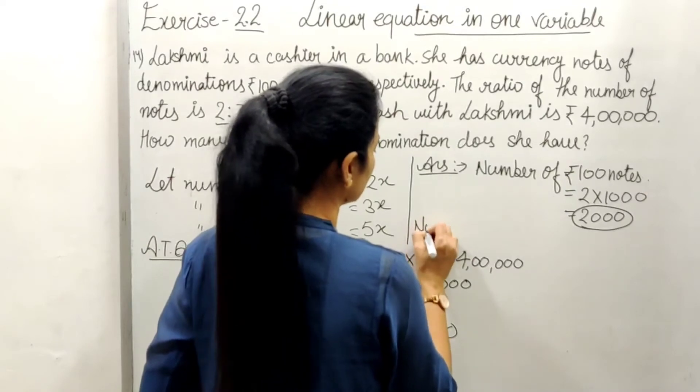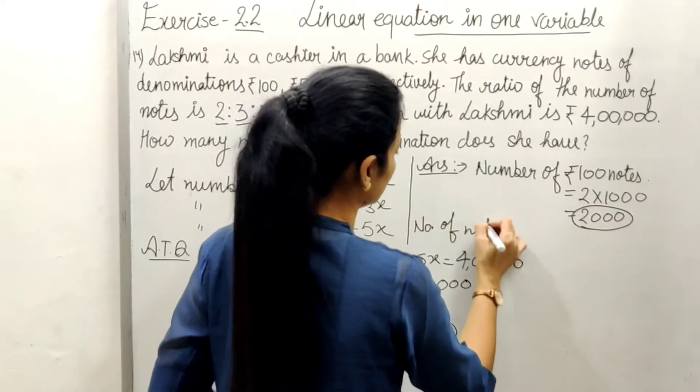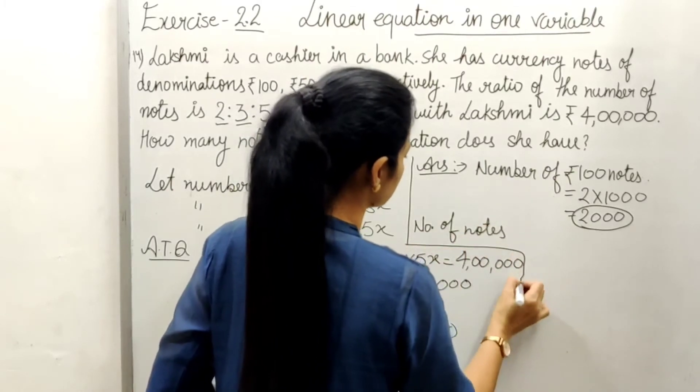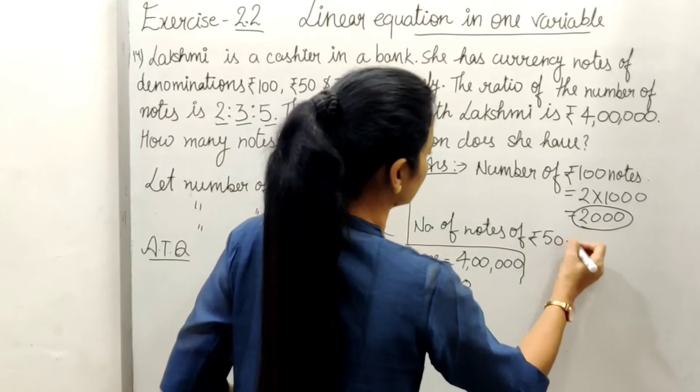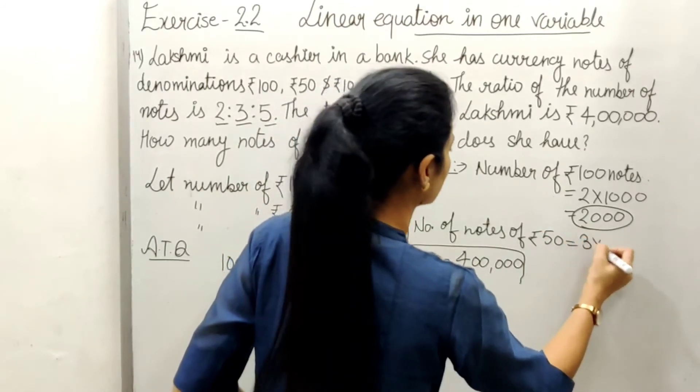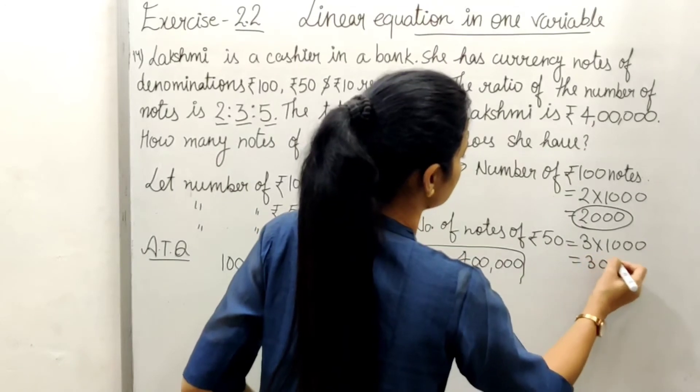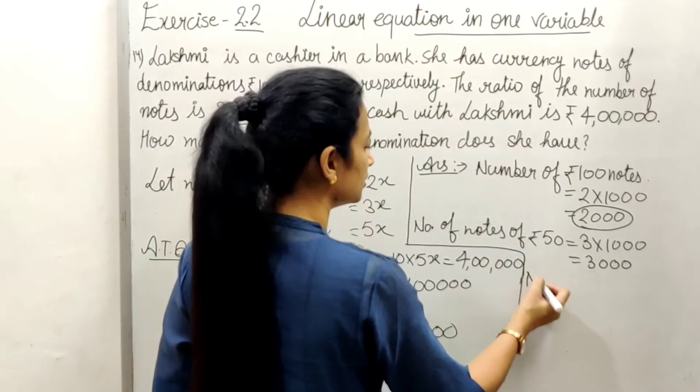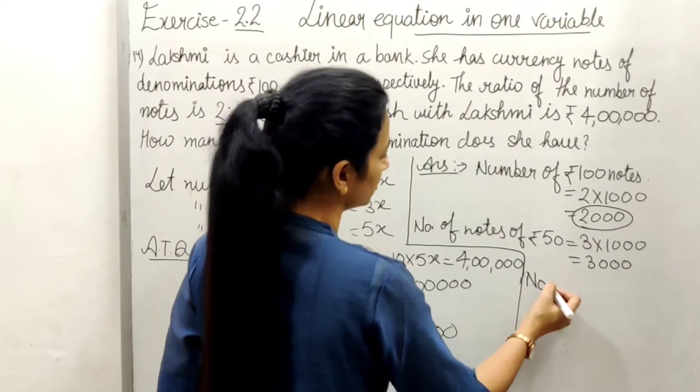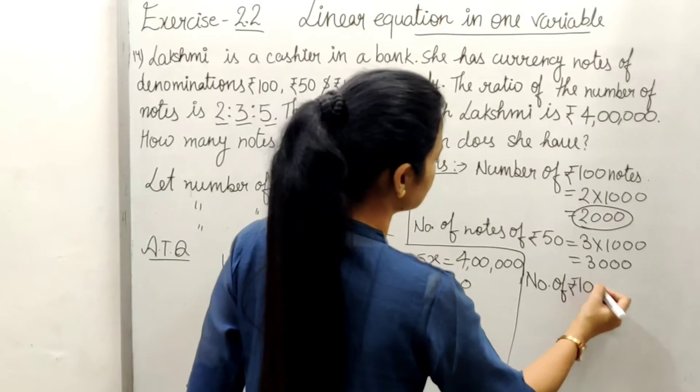Now for ₹50 notes, the number of notes of ₹50 will be 3 times 1000, that is 3000.